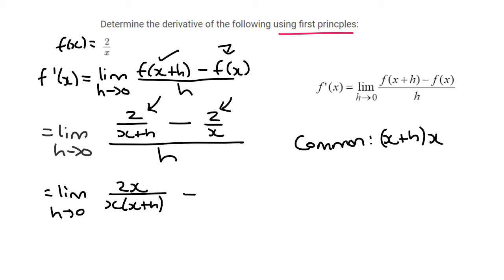And then we say minus. Now this one needs to be multiplied by x plus h. So we use a bracket. And then the denominator there is x, x plus h. And then all of that of course is over h.